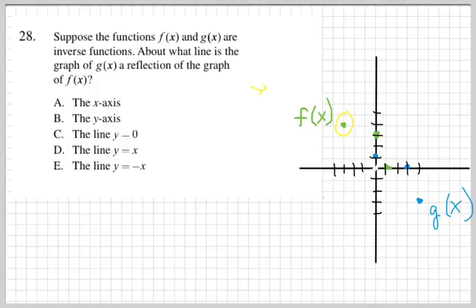Well, the inverse is simply if I have the 3 in the x spot on the f of x and the g of x, that 3 is going to be in the y spot.